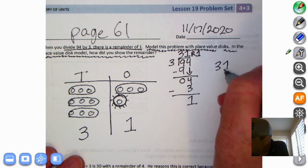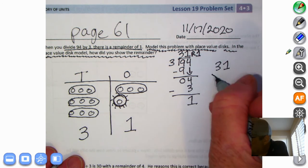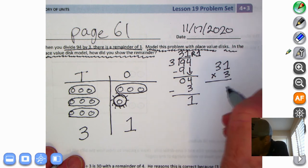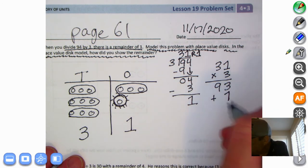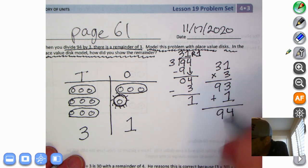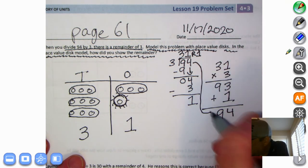We can check with multiplication. We take the quotient of 31 right there and we multiply it by the divisor which is 3. 1 times 3 is 3, 3 times 9 is 9. Look, it's not 94, it's 93. Oh gotta add the remainder on, plus 1. 3 plus 1 is 4 and bring down the 9 and now take a look, they are the same so we know our answer is correct.